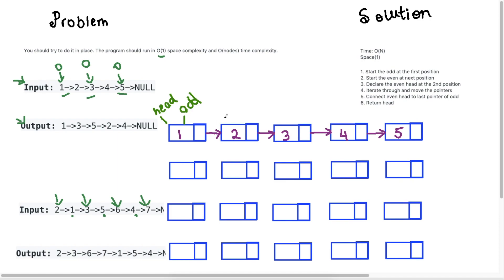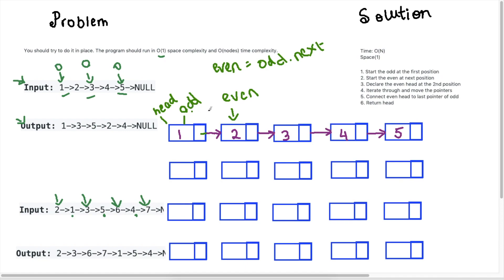Looking at the singly linked list, we know that the head is here and the first position is always odd. To get to the even position, we know that an even position follows an odd position, so we can say even equals odd.next. I've initialized even to odd.next and odd is the head because it's the first position. This gives us access to the first even position, which we reach by doing odd.next.